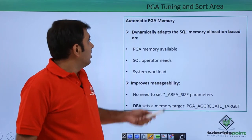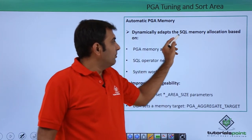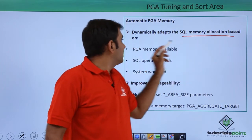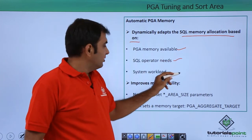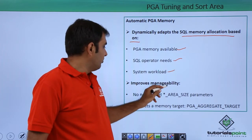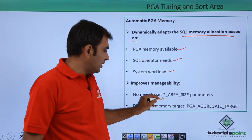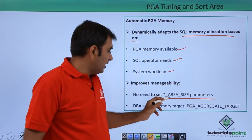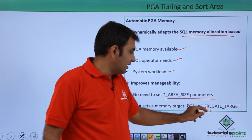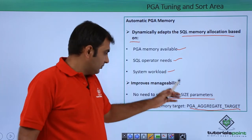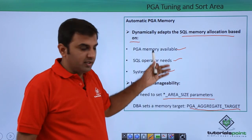Next, automatic PGA memory dynamically adapts the SQL memory allocation based on the PGA memory available. It considers SQL operator needs and the system workloads, and improves manageability. You need to set the parameter workarea_size_policy. The DBA sets either memory_target or PGA aggregate target — this is the parameter you need to set up; otherwise it is done automatically.